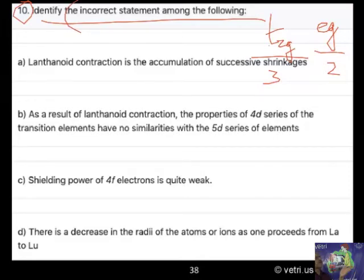Lanthanoid contraction is accumulation of successive shrinkages. Due to the contraction, shrinkage is coming. This is correct. It is the correct one. The question asks for incorrect statement. It is not A.